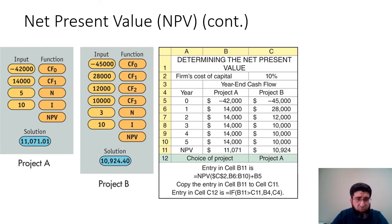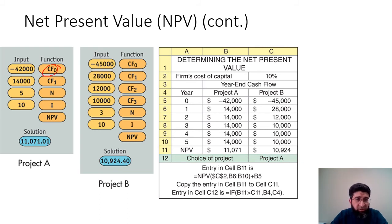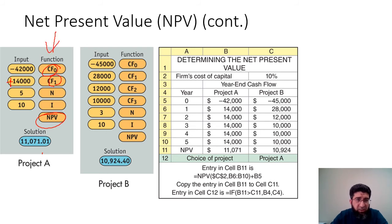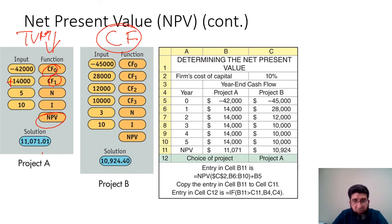The same calculation can be done on a financial calculator using the CF function. First, clear the memory and reset the calculator. Press CF, enter CF0 as the initial investment with a negative sign, then enter CF1 as $14,000 (positive). Press the arrow down and enter five for the number of periods. Then calculate NPV to get $11,071. The same approach works in Excel using the NPV function with a minus sign for the initial investment.